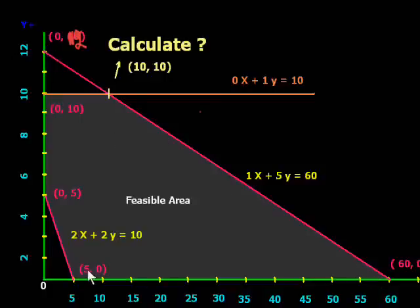Now second condition is 2x plus 2y more than 10. So we calculate its value, y value is 0 and x value is 5. So show this point and if x is 0, y will be 5. So draw this line. And in last, if x is 0, y will be 10. So this line will be straight.